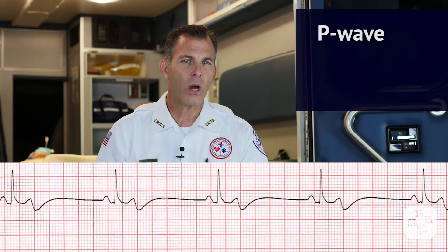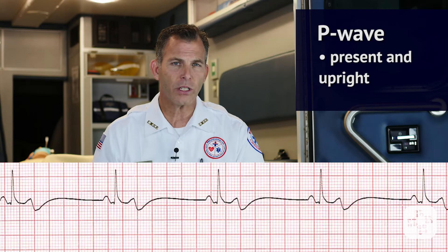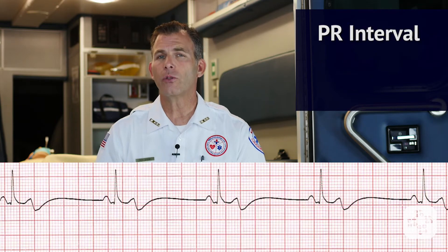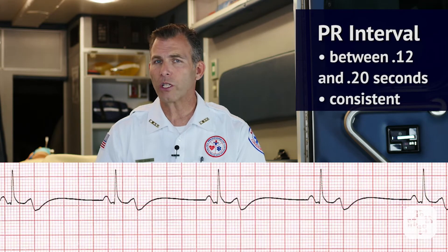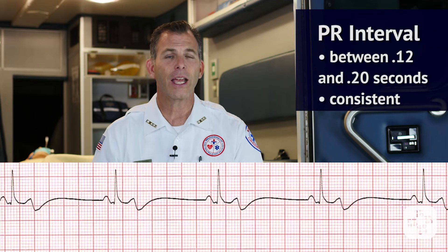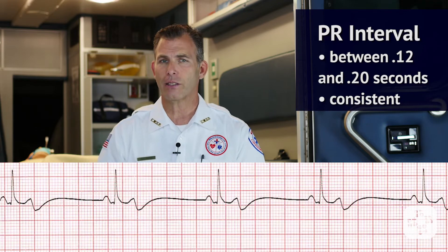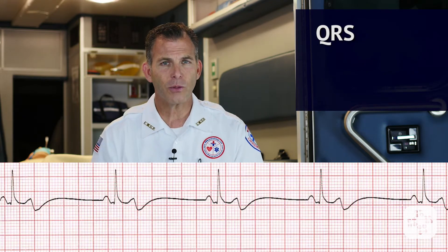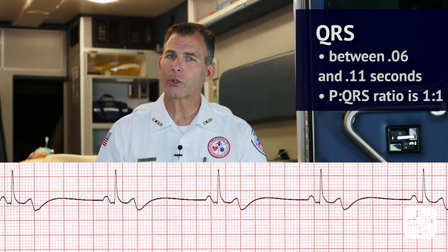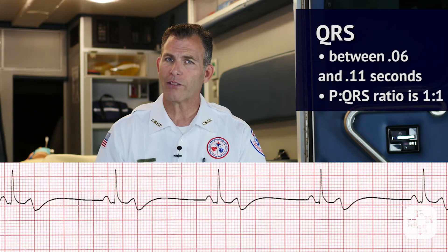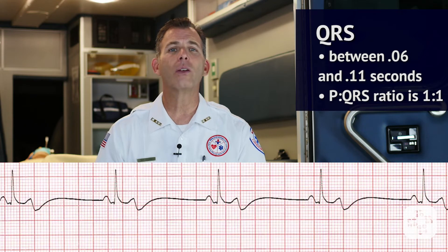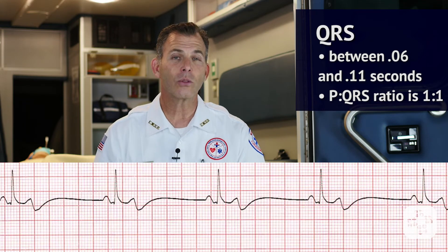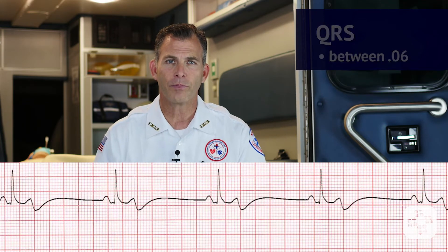P waves are present and upright with a P to R interval of between 0.12 and 0.20 seconds, and they're consistent. The QRS complex is between 0.06 and 0.11 seconds, and the P wave to QRS ratio is 1 to 1.